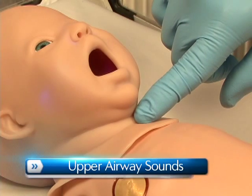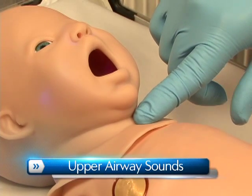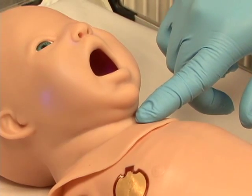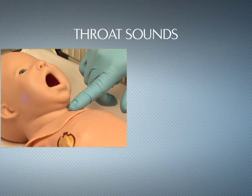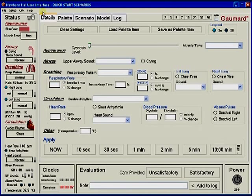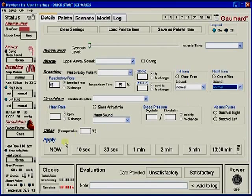Newborn HAL has several upper airway sounds synchronized with his breathing, such as normal breathing, grunting, or crying. Users can easily control the rate and depth of respiration and choose independent left and right lung sounds, which are synchronized with selectable breathing patterns.